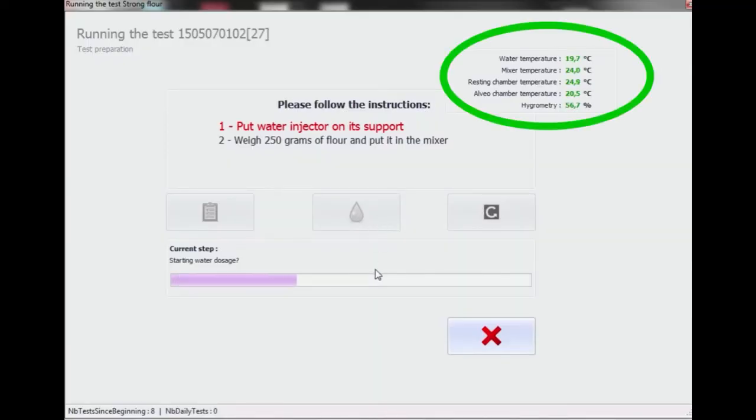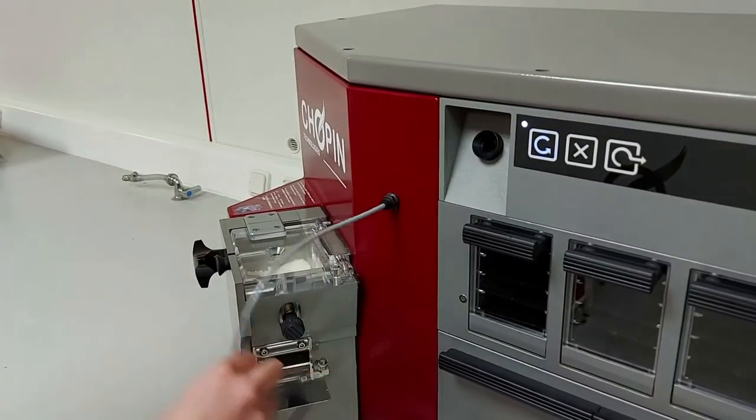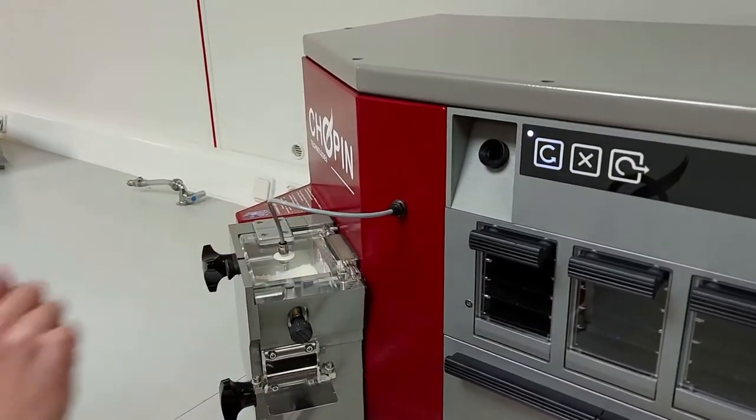When all the parameters have reached their reference values, send the instruction of the test to the device and start the water dosage. Once this dosage has been carried out by the device, position the water injection nozzle on the tank.